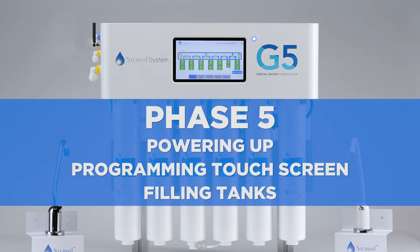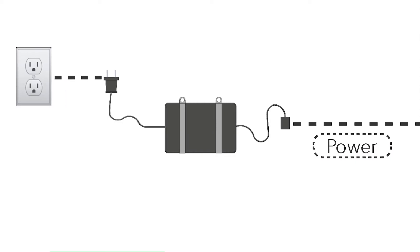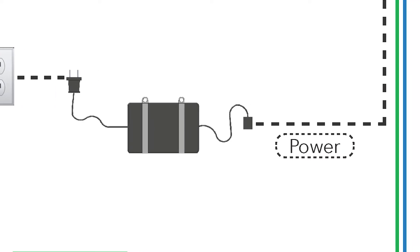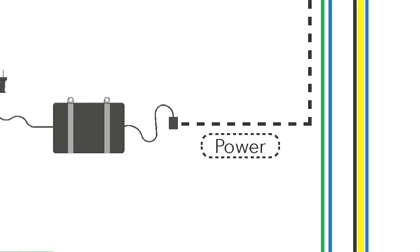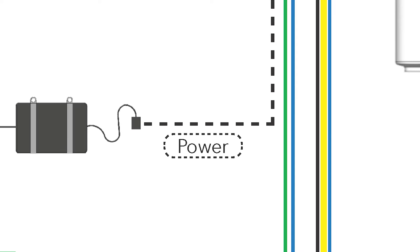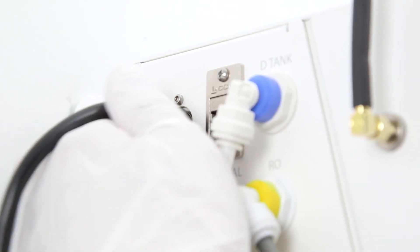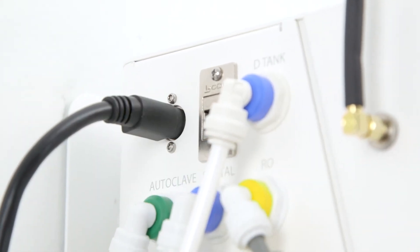Phase 5. Powering up, programming the touchscreen, and filling. Powering up the system. Power adapter. Select a location within 6 feet of the outlet and ensure the power cord can reach both the outlet and the system without tension on the cable. When you plug the unit in, the touchscreen will power on and you'll be brought to the home screen.